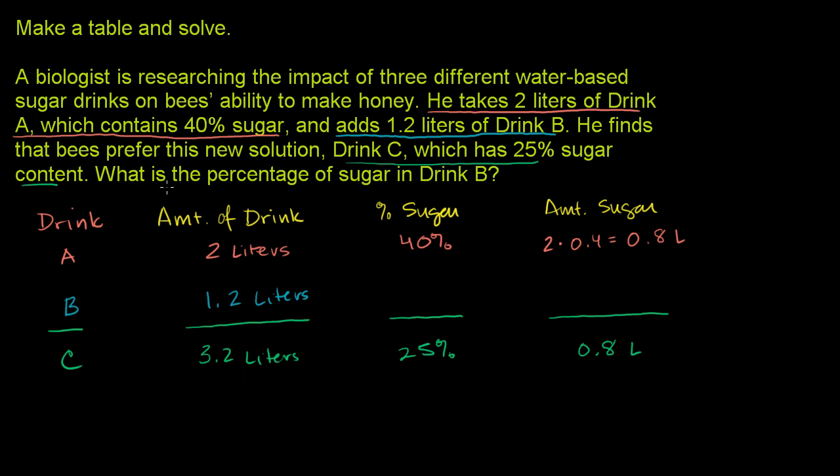Now, they want to know what is the percentage of sugar in Drink B? Let's just call that x. So the percentage of sugar in Drink B, let's call that x. Now, if it's x percent sugar here, or this is the decimal equivalent, how much sugar do we have? We have 1.2 liters times the decimal equivalent of sugar. So this is going to be 1.2 times x.